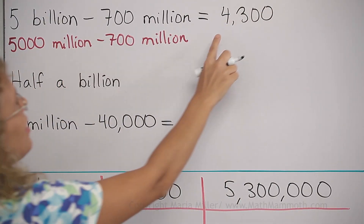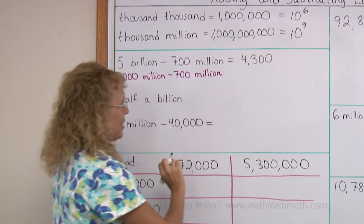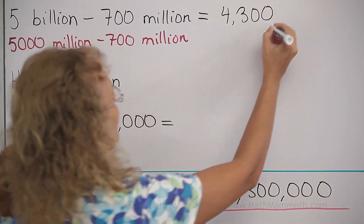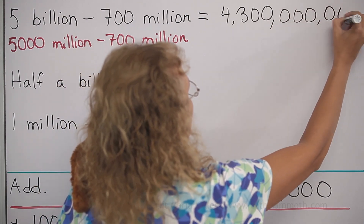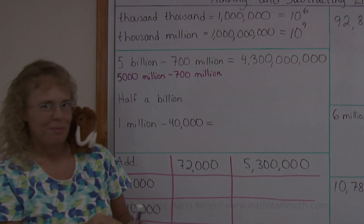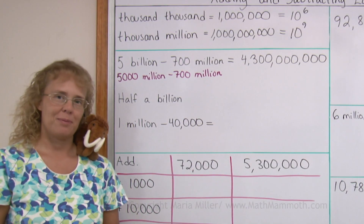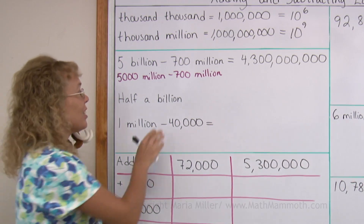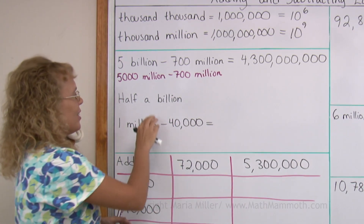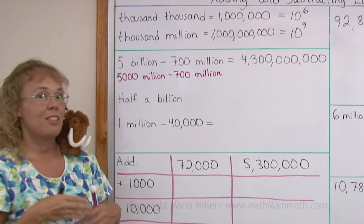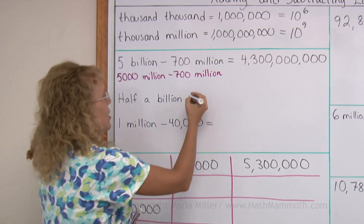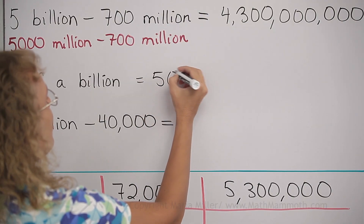But instead of apples, I get that many millions. For the millions — ten to the sixth power — I need to tag six more zeros here. So we get four billion, three hundred million. How about half a billion? It helps to think that a billion is a thousand million. So half of a thousand million — half of a thousand — that's five hundred. So we get five hundred million.